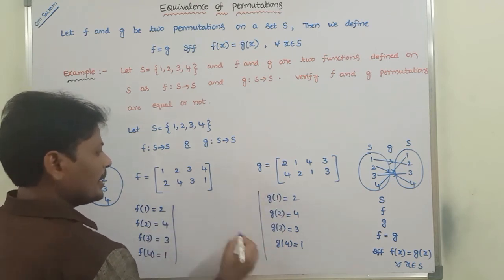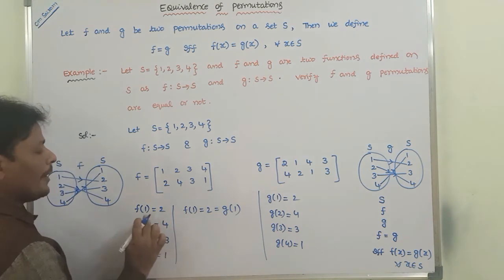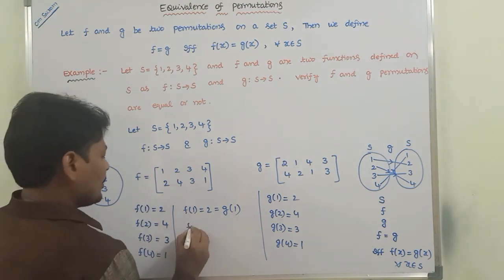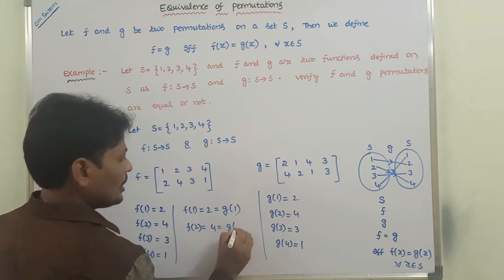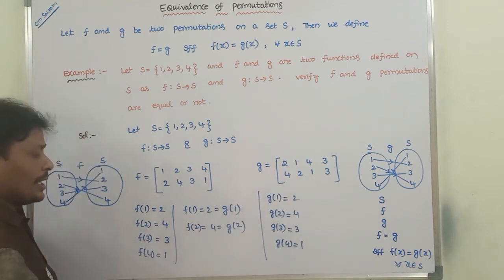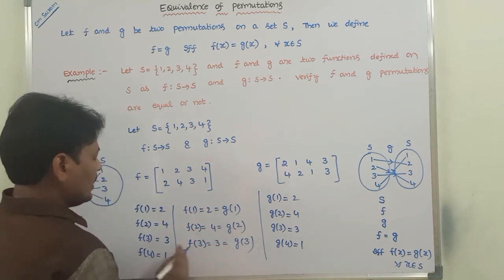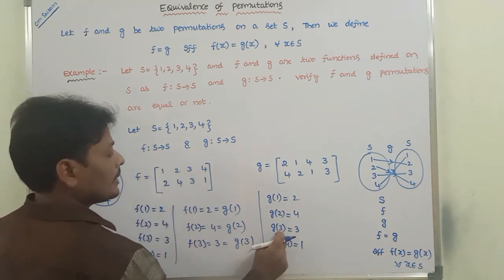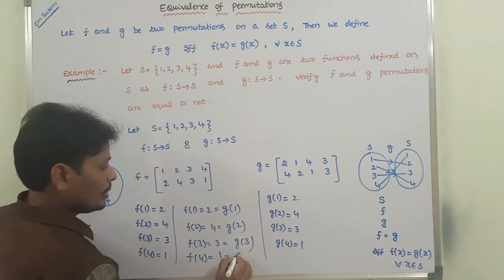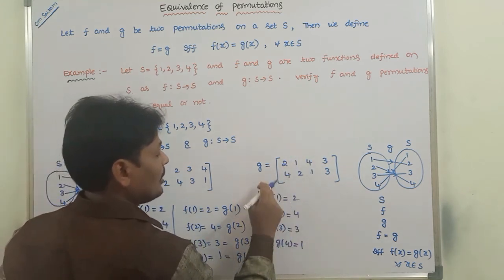Now observe these two permutations. F(1) = 2 = G(1): the image of 1 in F is 2, and the image of 1 in G is 2 — both are equal. F(2) = 4 = G(2): the image of 2 in F equals the image of 2 in G. F(3) = 3 = G(3): the image of 3 in F equals the image of 3 in G. F(4) = 1 = G(4): the image of 4 in F equals the image of 4 in G.